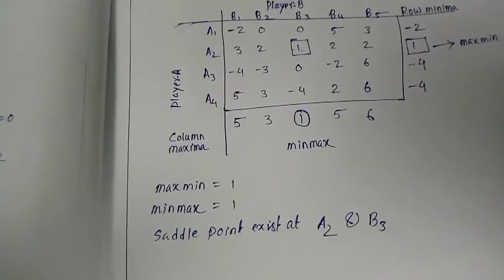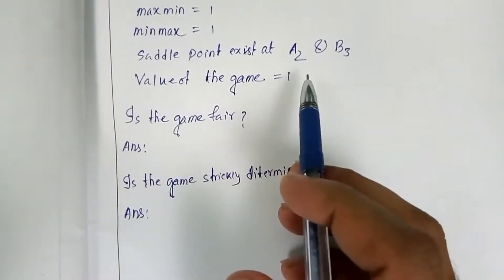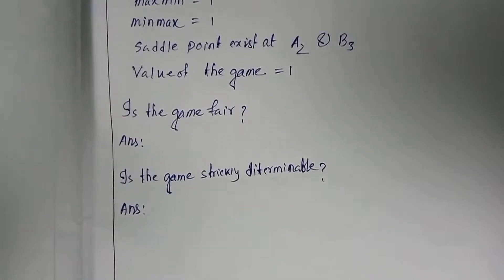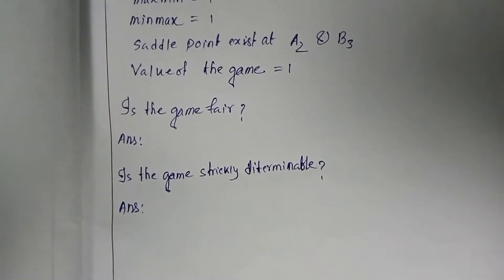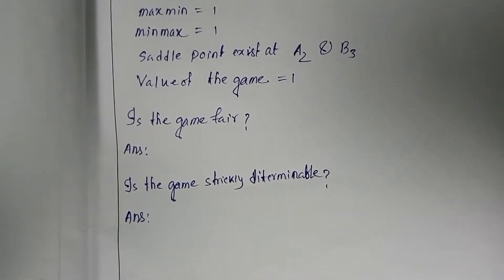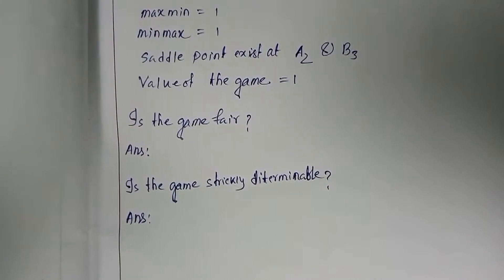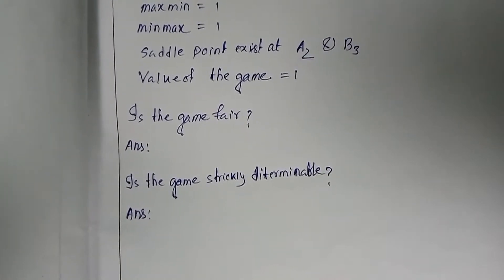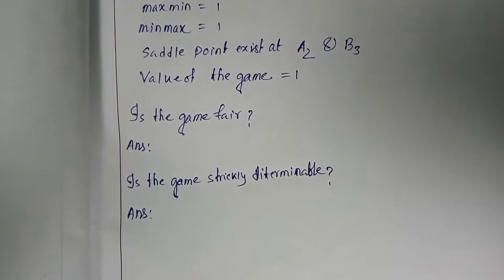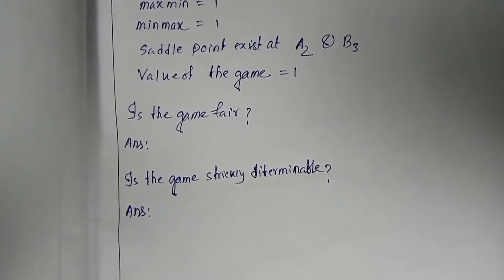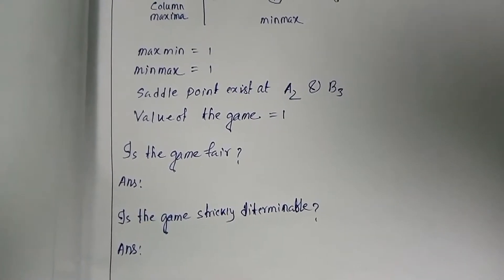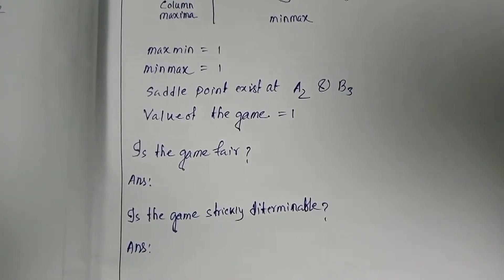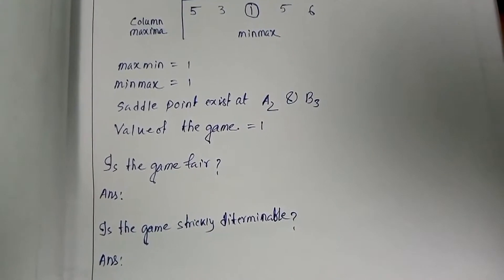Additionally, let's check two things: whether the game is fair, and whether the game is strictly determinable. For a fair game, the condition is that maximin equals minimax equals the value of the game, and all must equal zero. For a strictly determinable game, the condition is that the maximin equals the minimax equals the value of the game — they just need to be equal to each other.